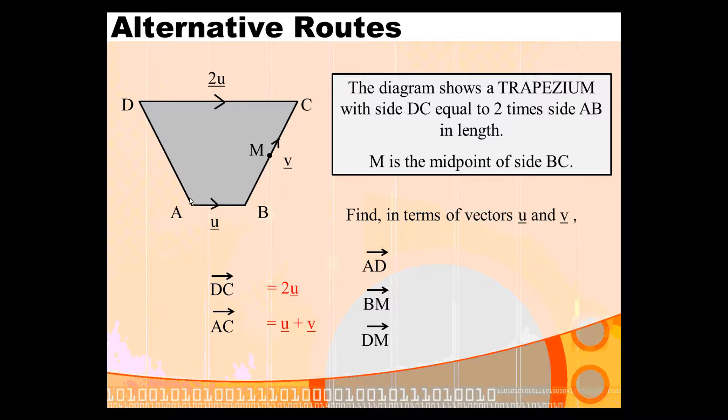To go from A to D, you go from A to B to C and then back to D. So it's U plus V, but then to go from C to D, you describe that journey going back as negative 2U. So you get U plus V minus 2U. To go from B to M, to the midpoint, it's just half of vector V. You're going half the journey, so it's half the vector.